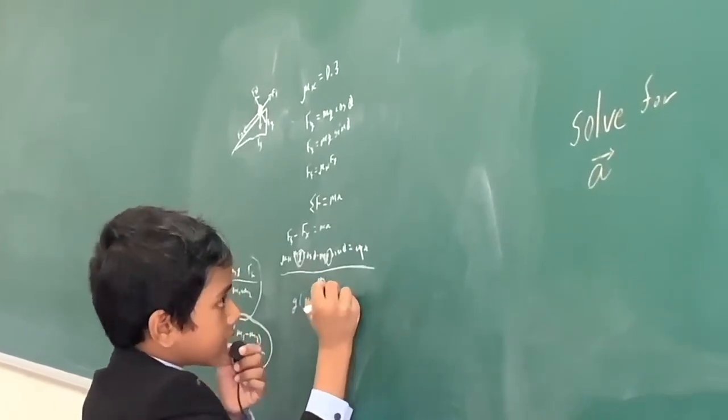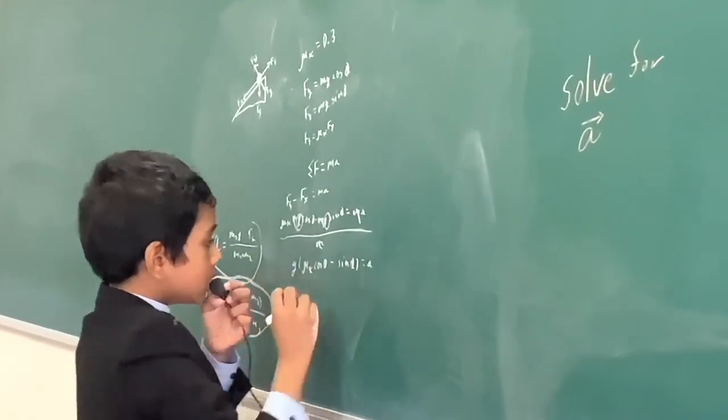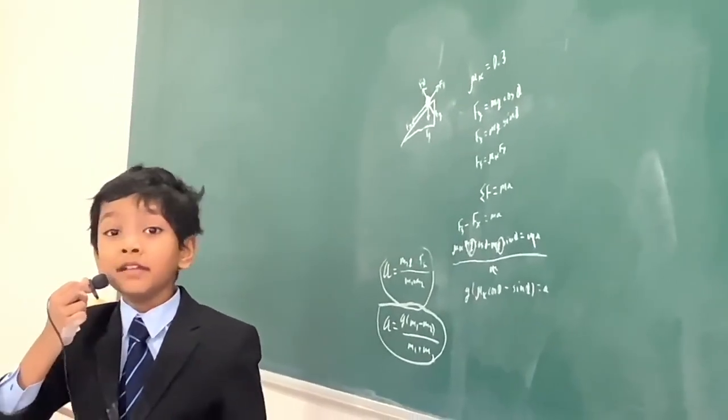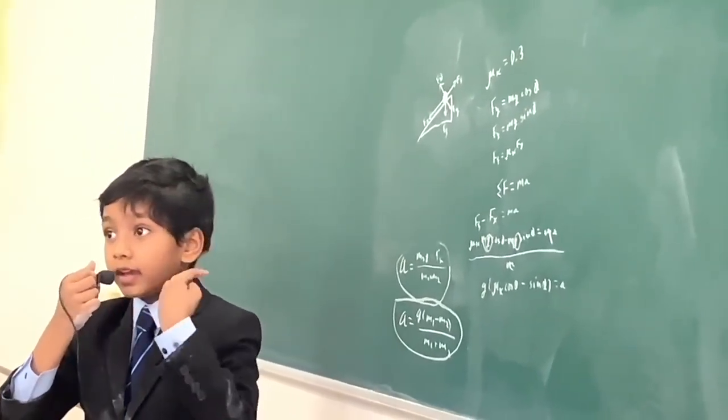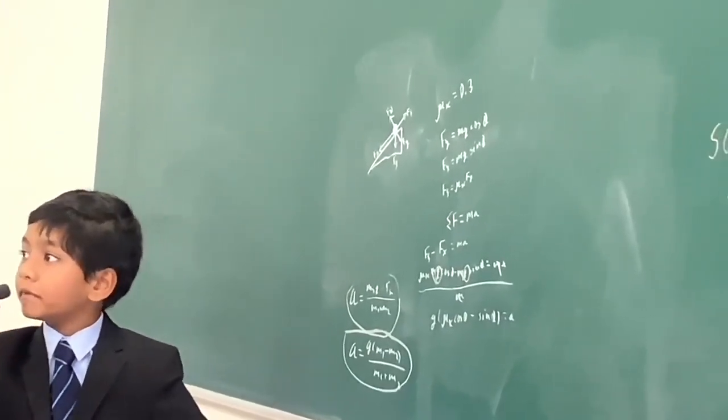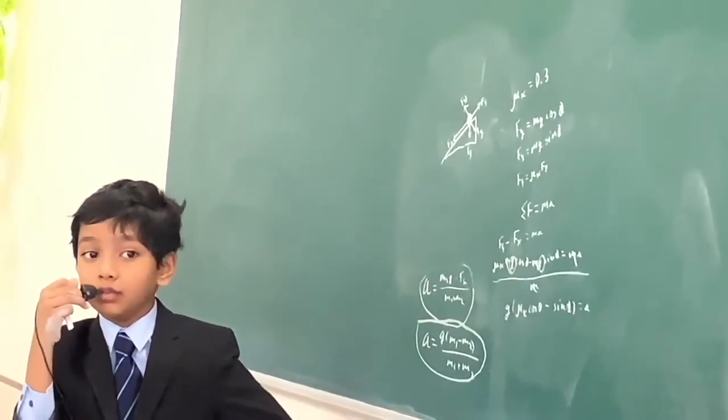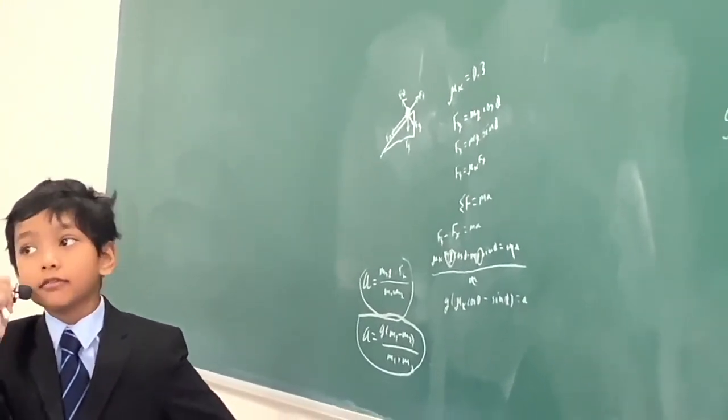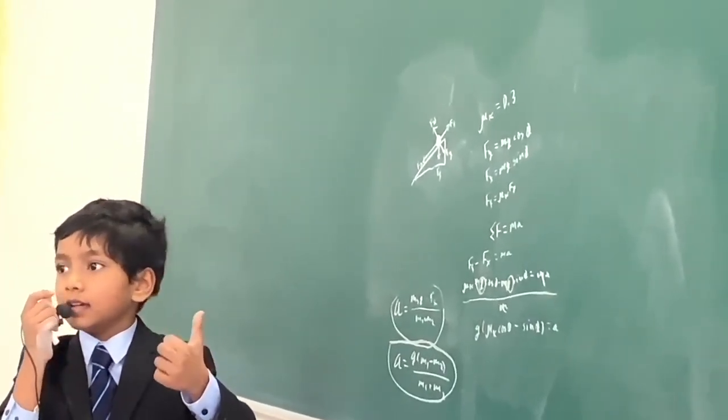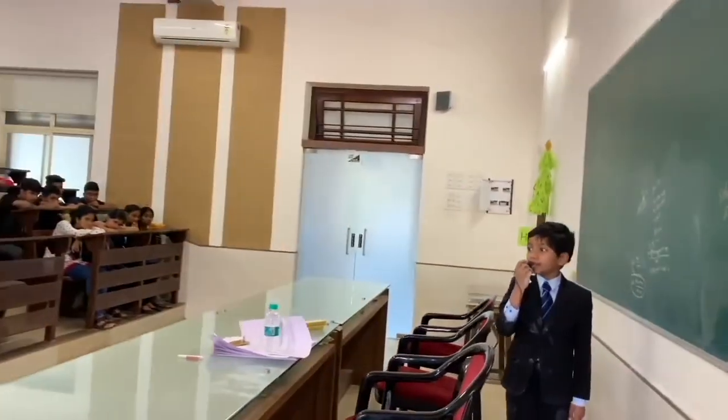And now all we need to do is plug it in. So let's simplify to g times mu k cosine theta minus sine theta. I just factored out g for my convenience. You don't have to. And so now the thing is that this must mean that this Newton's second law is here. It is not going at a constant velocity, but rather there is some acceleration over here. And so now all we have to do is plug everything in. Is there anybody in this crowd that has a calculator? Everybody take out your calculator now.